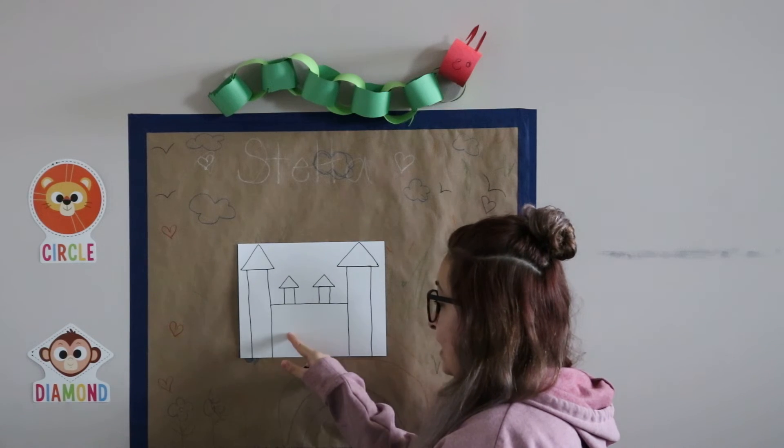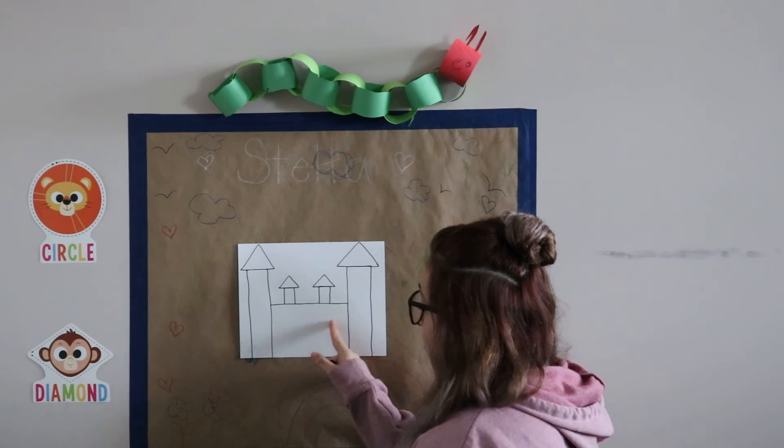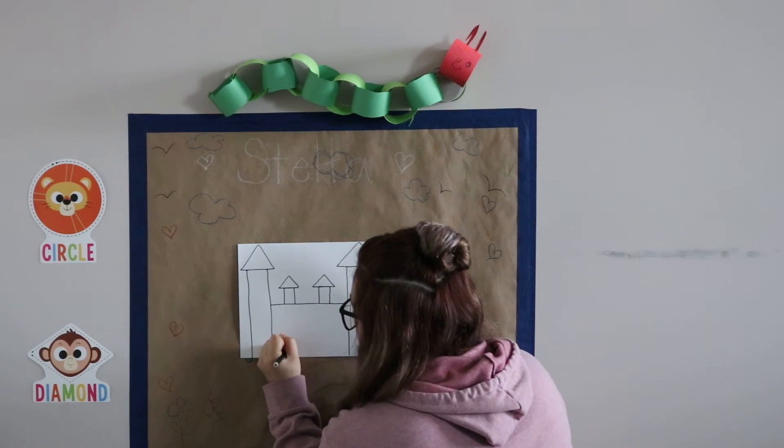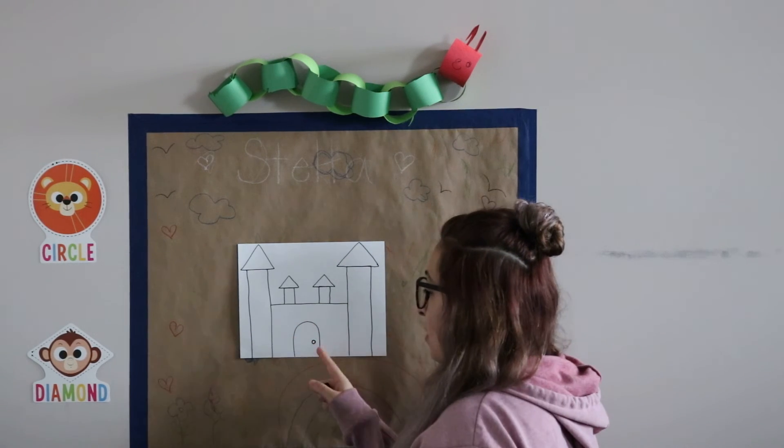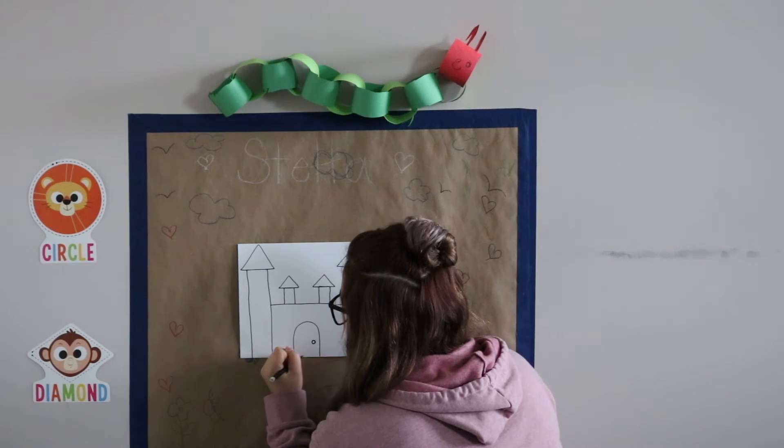Next, our castle needs a door right here. So we are going to curve around and make the door right here. And give it a little door handle circle right there.